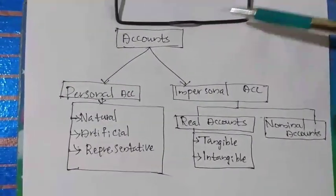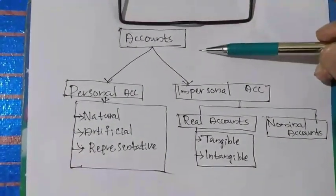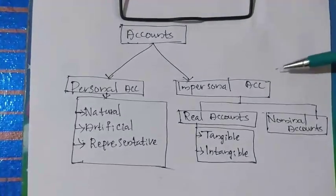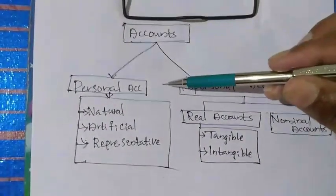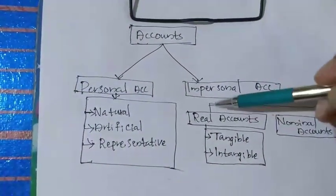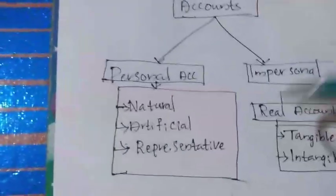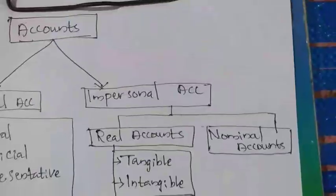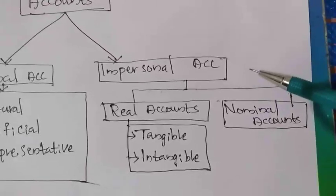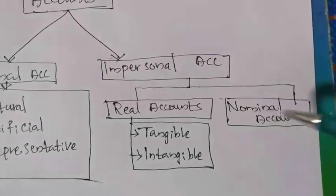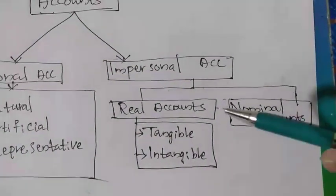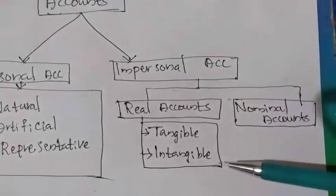Simply, accounts are classified into personal account and impersonal account. Under personal accounts, we have three types: natural, artificial, and representative. Impersonal accounts are classified into two — real account and nominal account. Real accounts are tangible or intangible.